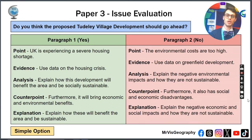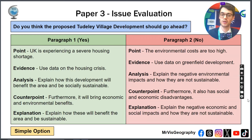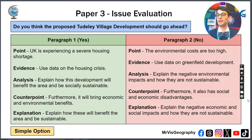If you did the simple option, your point would be that the UK experiences a severe housing shortage. You use evidence to back that up, then explain how Totally would help solve this issue. You'd also explain the economic and environmental benefits before explaining how they benefit the area and how they're sustainable.